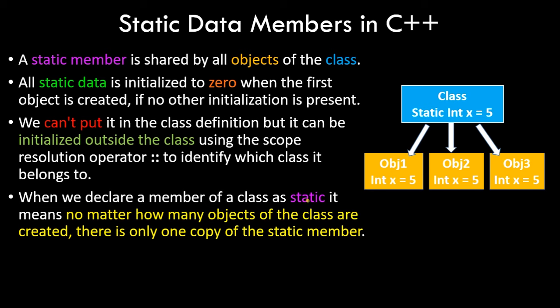Where does a static data member become advantageous? Say you have a class and you're creating many objects and you want to keep track of the number of objects being created. A static data member — for example, a variable called count — can help you track that. Let's see a program to get a very clear understanding.